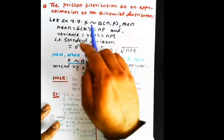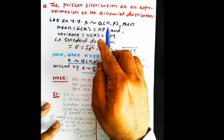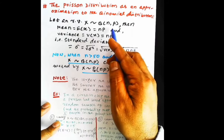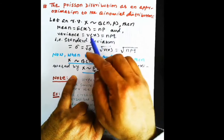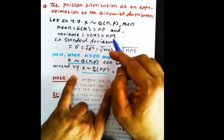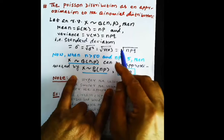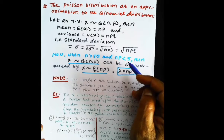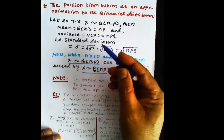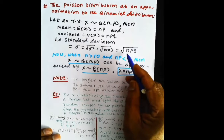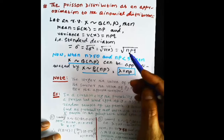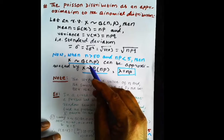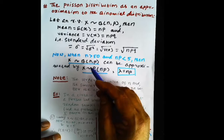Let a random variable X follow the binomial distribution with parameters n and p. Recall that the mean is np, the variance is npq, and the standard deviation is the square root of np. In a previous class, we learned that when n is indefinitely large and p is indefinitely small, the Poisson distribution becomes the limiting case of the binomial distribution.